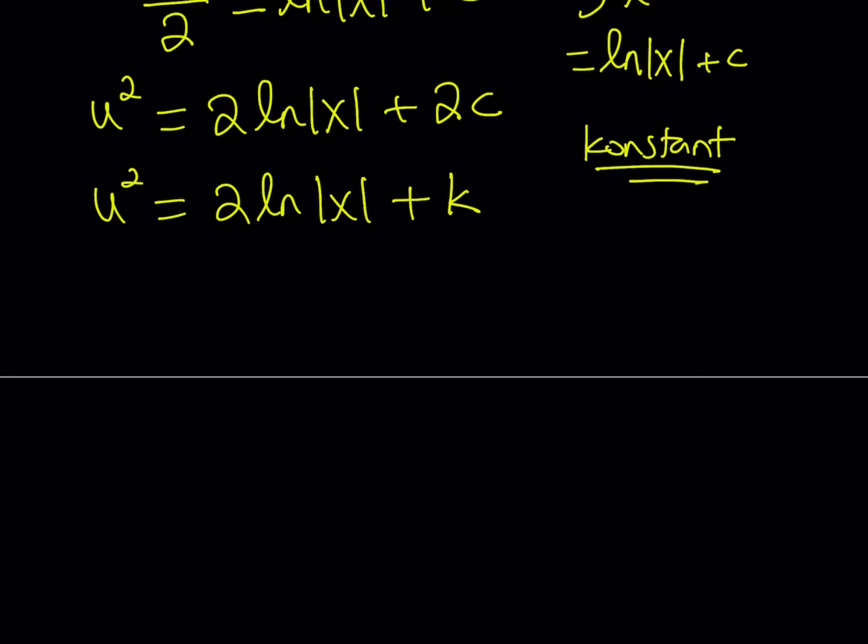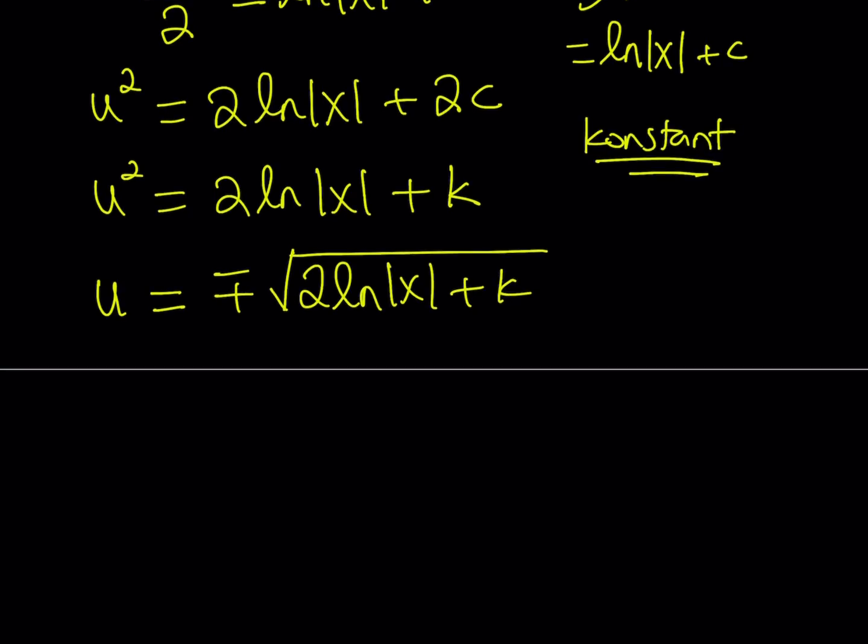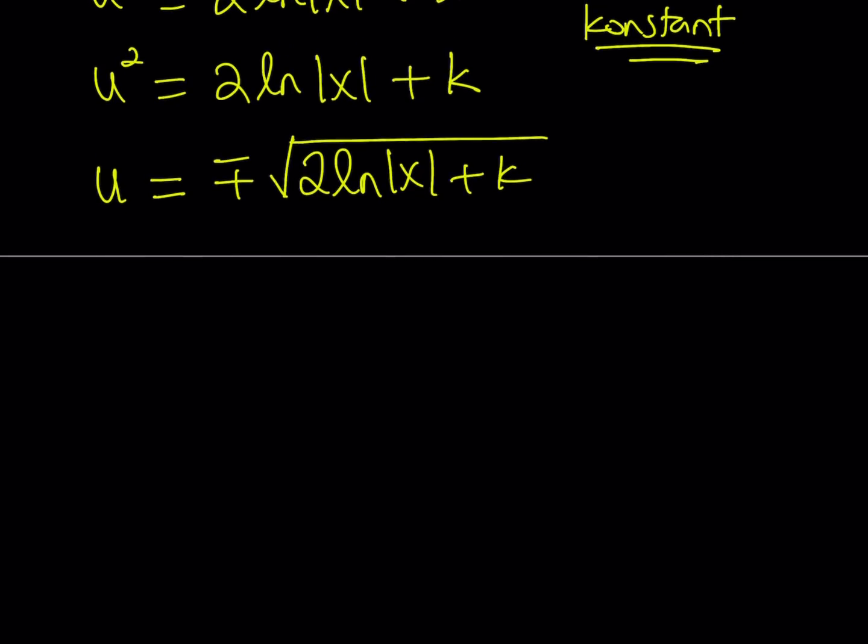So now we have this equation, but I want to get u by itself. So what should I do? Let's go ahead and square root both sides. But when you square root both sides, we get into something called absolute value. So let's go ahead and eliminate that problem by using a plus minus sign. If you take the square root of both sides, you get something like the following. But this is u.